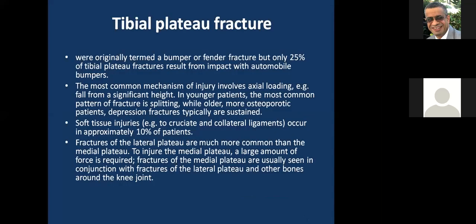Tibial plateau fractures were originally termed bumper or fender fractures, but only 25% result from impact with automobile bumpers. The most common mechanism involves axial loading, for example, a fall from height. In younger patients, the most common fracture pattern is splitting, while in older osteoporotic patients, depression fractures are typically sustained. Soft tissue injuries, such as cruciate and collateral ligament injuries, occur in approximately 10% of patients.